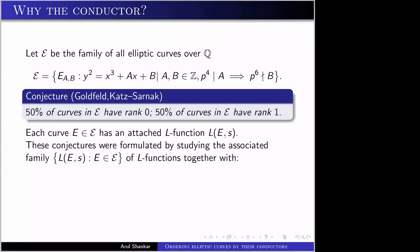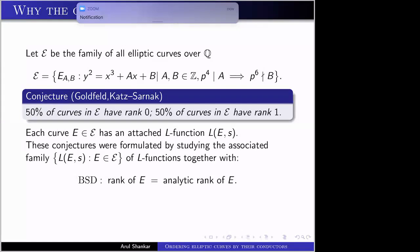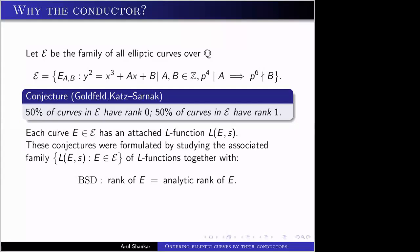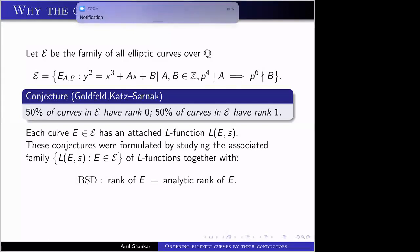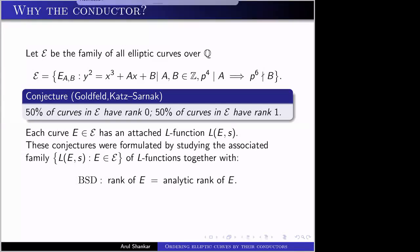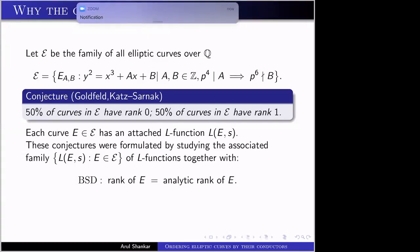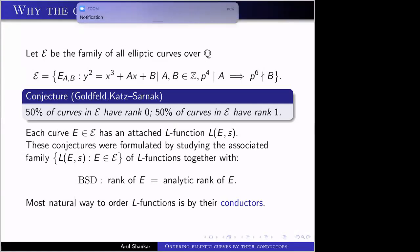If you want to study the rank of an elliptic curve, the Birch and Swinnerton-Dyer conjecture tells us that the rank equals the analytic rank — the order of vanishing of the L-function at the critical point. These conjectures were formulated by studying how the analytic rank is distributed in these families, then using BSD to deduce how the algebraic rank is distributed. It makes a lot of sense to study the associated family of L-functions, and the most natural way to order L-functions is by their conductors, so it also makes sense to order elliptic curves by conductor.